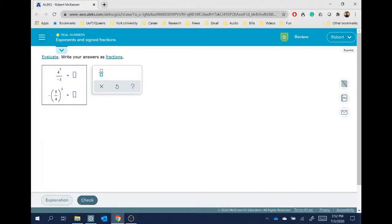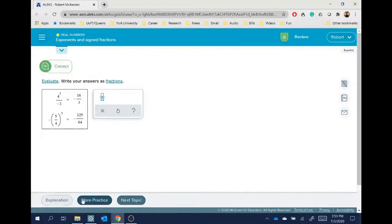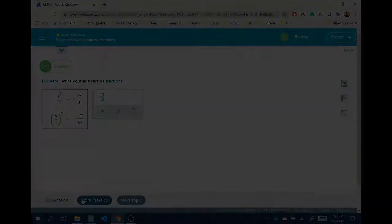Here we are on Alex and we have the same question that we saw in my slides and so we evaluated the exponents and then we wrote it as fractions. So the first one the answer was negative 16 over 3. And the second question was negative 125 over 64. Let's see if we've got the right answer and we do. We will look at some more difficult exponent questions in the later topics but for now this is the basics.